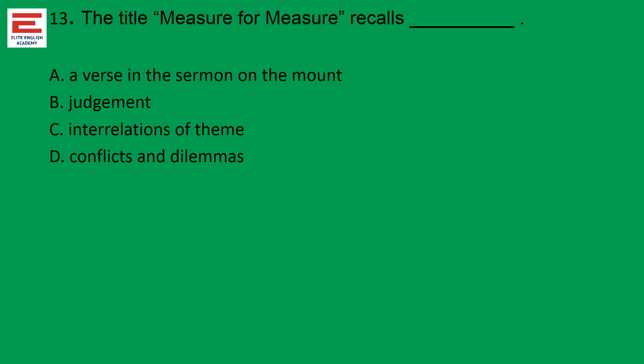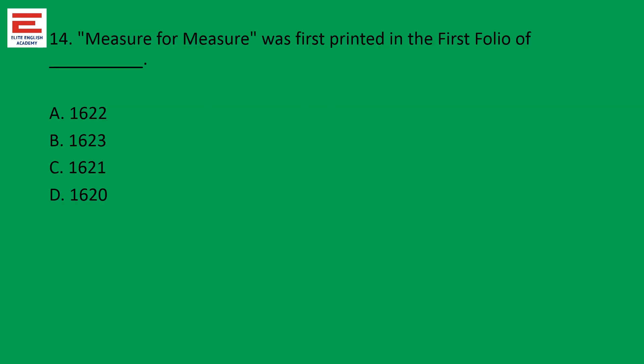Next: the title Measure for Measure recalls a verse in the Sermon on the Mount — probably by mistake they gave two similar questions, but it is good for the students. Question fourteen: Measure for Measure was first printed in the first folio of what year? Please keep in mind that no play of Shakespeare was published during his lifetime; it was published in the first folio. The year of publication is 1623. So in future also, it is a very good source. In 1623, for the first time, Shakespeare's plays were collected and published. Even a second folio and third folio exist.